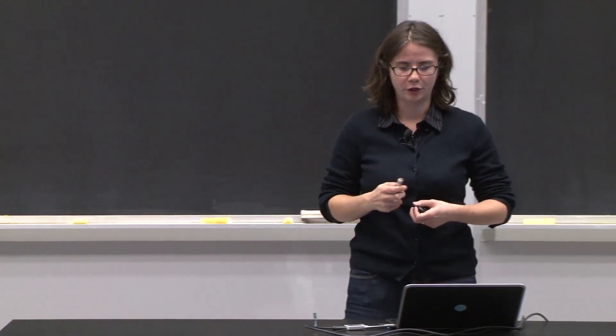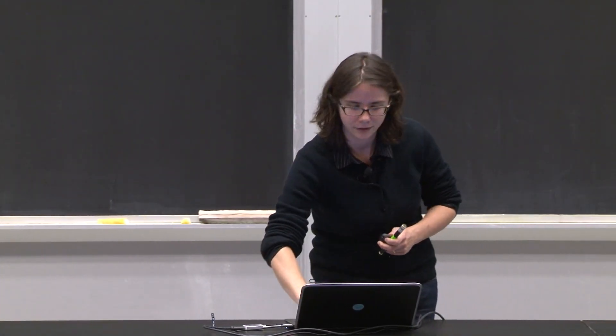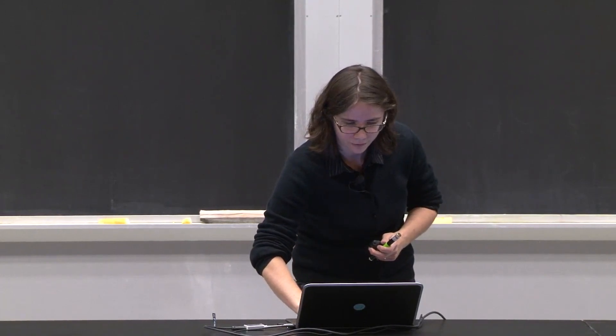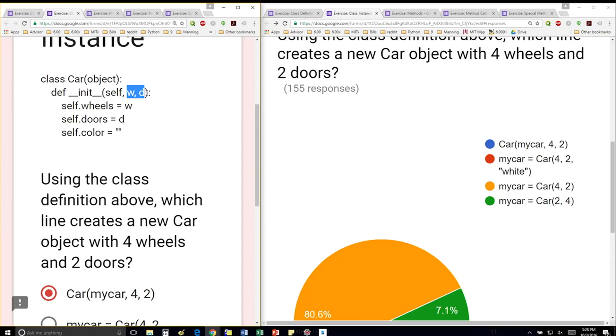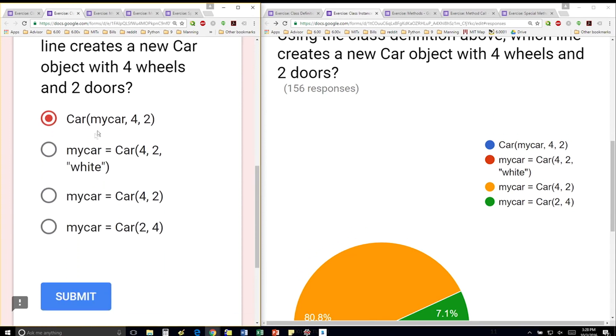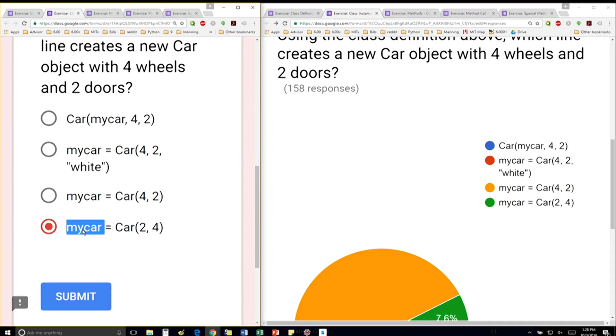When you're creating your object, you have to give it one less parameter than what you have. Here, we're just going to have to create it with the w and the d. We're going to create this variable, my car, and assign it four for the number of wheels and two for the number of doors.